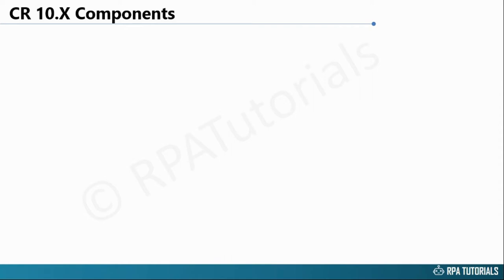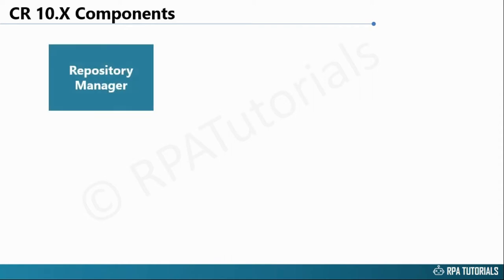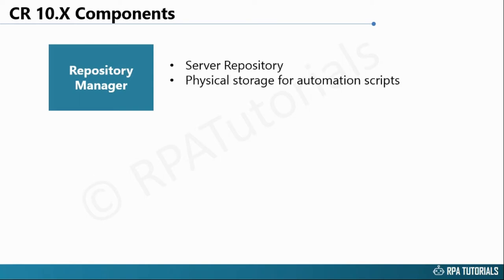The first component that we need to look at is the Repository Manager. This represents the server repository where all automation files are physically stored. A user with the right access control and permissions can either run or schedule an automation from the Repository Manager on a registered client machine.